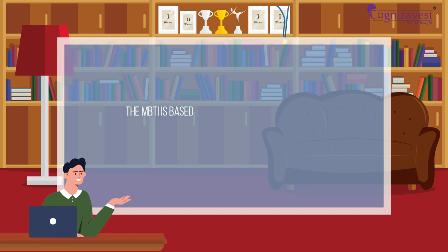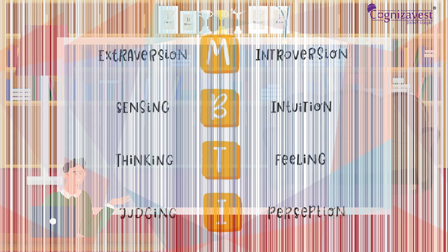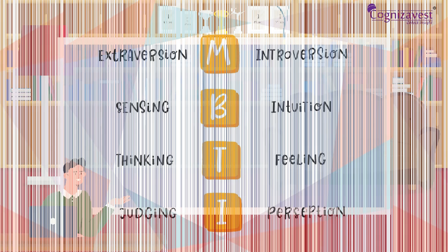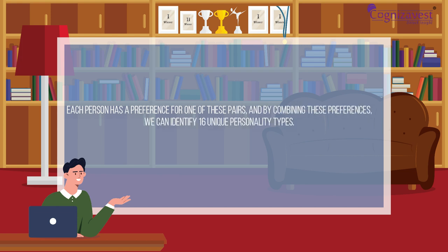MBTI is based on four dichotomies, or pairs of opposite preferences, that include introversion versus extroversion, sensing versus intuition, thinking versus feeling, and judging versus perceiving. Each person has a preference for one of these pairs, and by combining these preferences we can identify 16 unique personality types.